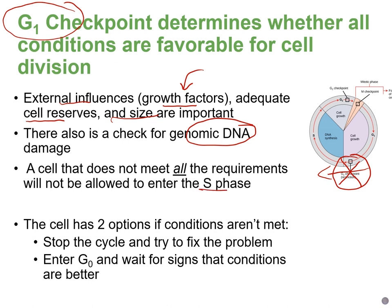If the requirements aren't met, the cell can either stop the cycle and try to fix the problem, or exit G1 and enter the gap zero phase to wait for conditions to improve.